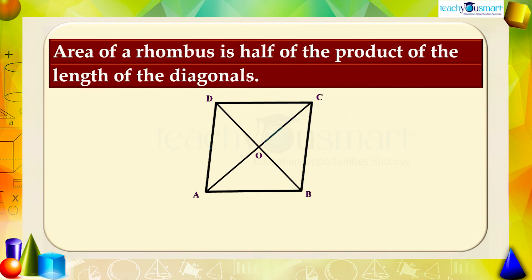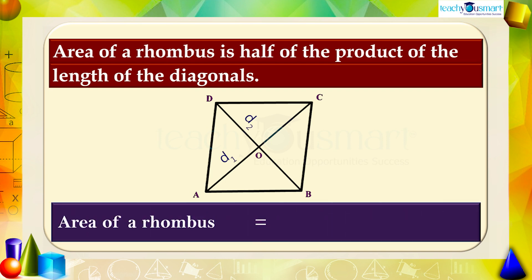If AC equals D1 and BD equals D2, then the area of a rhombus equals 1/2 × D1 × D2.